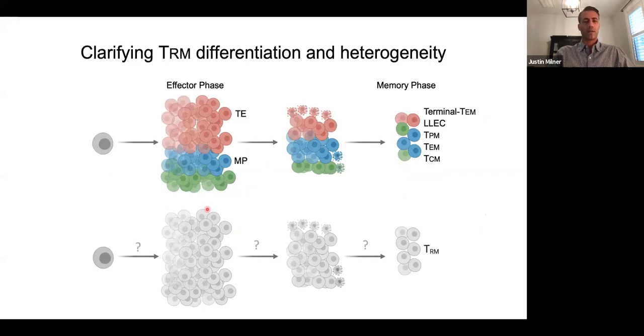There's also heterogeneity within the memory time points, with a number of well-described and characterized populations. Two of the most studied are effector memory cells and central memory cells. But one issue with this differentiation model is that it's primarily based on studies of circulating CD8 T cells in the spleen, blood, or lymph node. A couple years ago, we were really interested in understanding if tissue resident memory cells have a similar differentiation process, as well as analogous heterogeneity within individual time points.